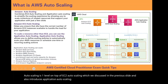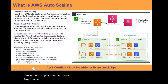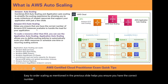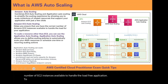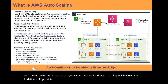EC2 autoscaling, as mentioned previously, helps you ensure you have the correct number of EC2 instances available to handle the load for your application. To scale resources other than EC2, you can use application autoscaling, which allows you to define scaling policies to automatically scale your AWS resources, or schedule one-time or recurring scaling actions.